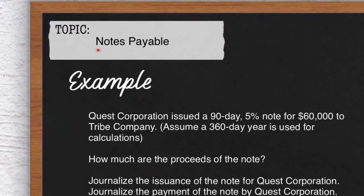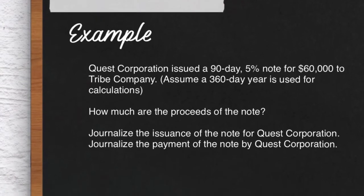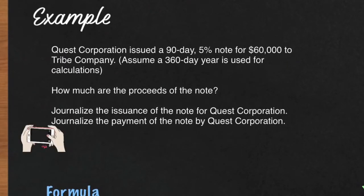Let's talk about notes payable. Notes payable is a liability on your balance sheet - really, notes payable is a loan with interest. You borrow money and you're charged interest. In our example, Quest Corporation issued a 90-day, 5% note for $60,000. That word 'issued' is another word for borrowed, so this company is borrowing money.